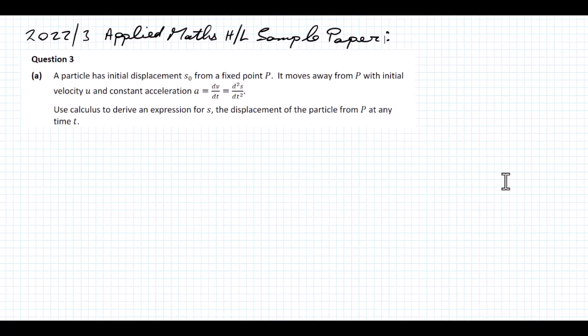So basically what we're doing here is deriving a couple of the SUVAT equations. So V is equal to U plus AT, and S is equal to UT plus half AT squared.